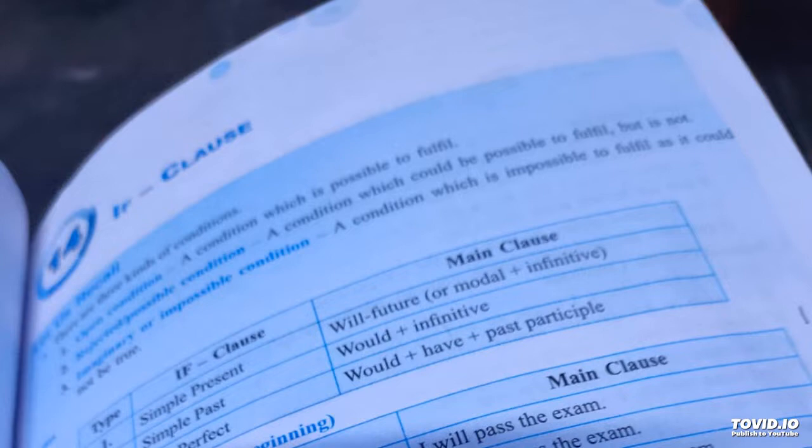Open condition. There are three kinds of conditions. Open conditions, a condition which is possible to fulfill. Rejected possible condition, a condition which could be possible to fulfill but is not. And last, imaginary, a condition which is impossible to fulfill as it could not be.